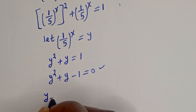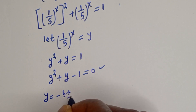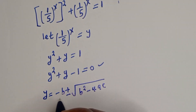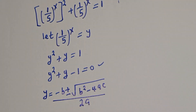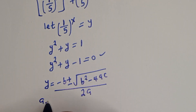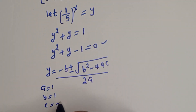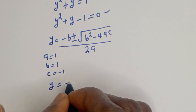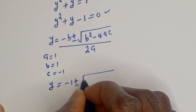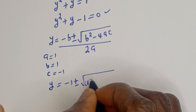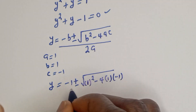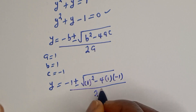The general quadratic formula is: y equals negative b plus or minus square root of b squared minus 4ac, all over 2a. From our equation, a equals 1, b equals 1, and c equals negative 1. So y equals negative 1 plus or minus square root of 1 squared minus 4 times 1 times negative 1, divided by 2 times 1.